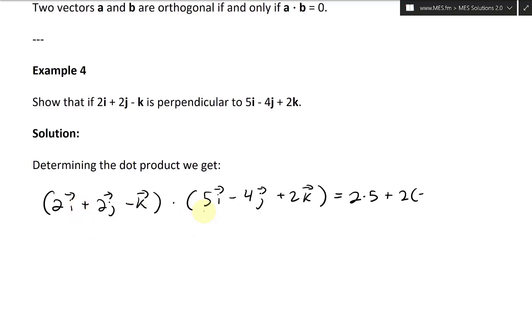And then plus negative one times two, like that. This equals 10 minus 8 minus 2.